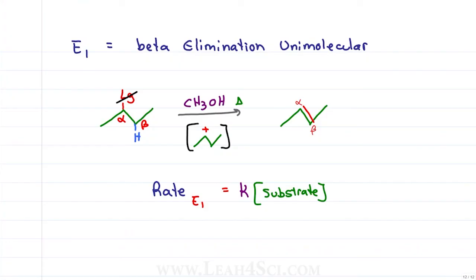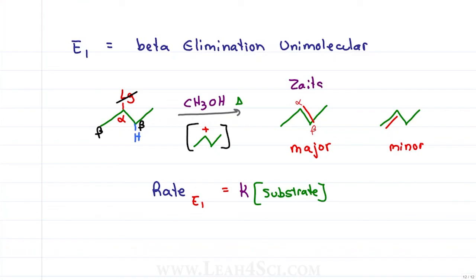If you have more than one beta hydrogen you have the potential to get two different products. We drew the major product, but we can also form a pi bond to the less substituted carbon giving us the minor product. This follows Zaitsev's rule, which tells us that the more substituted the pi bond, the more stable it is and the more likely it is to form.